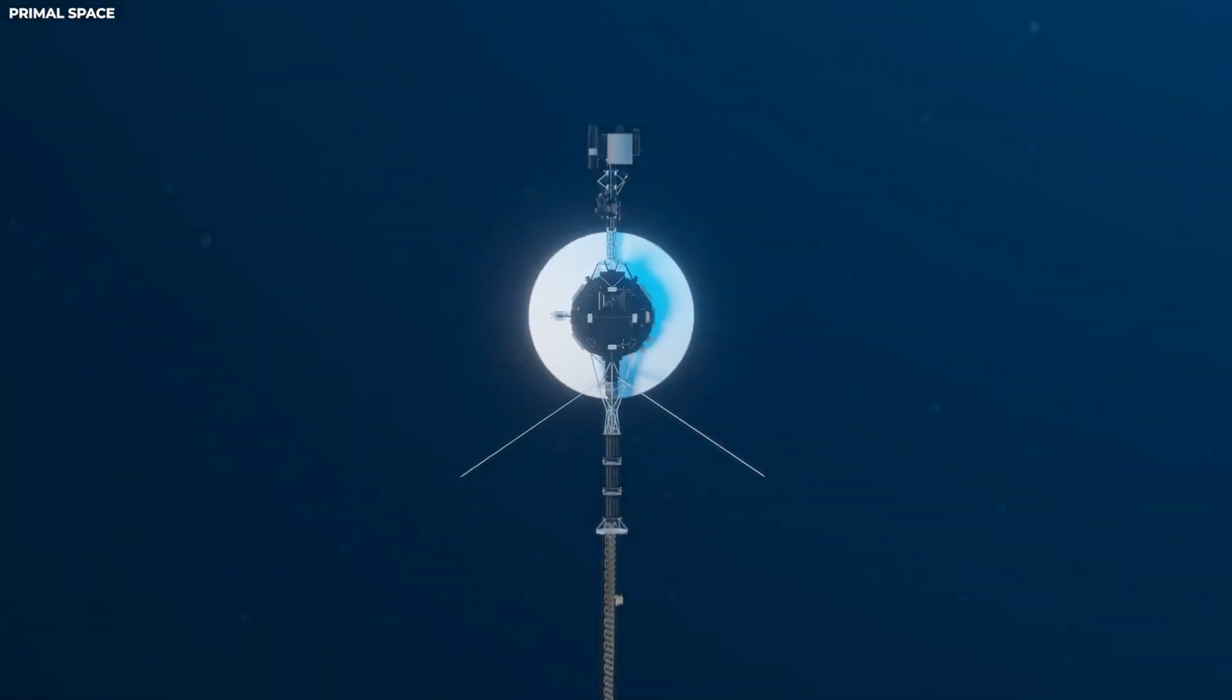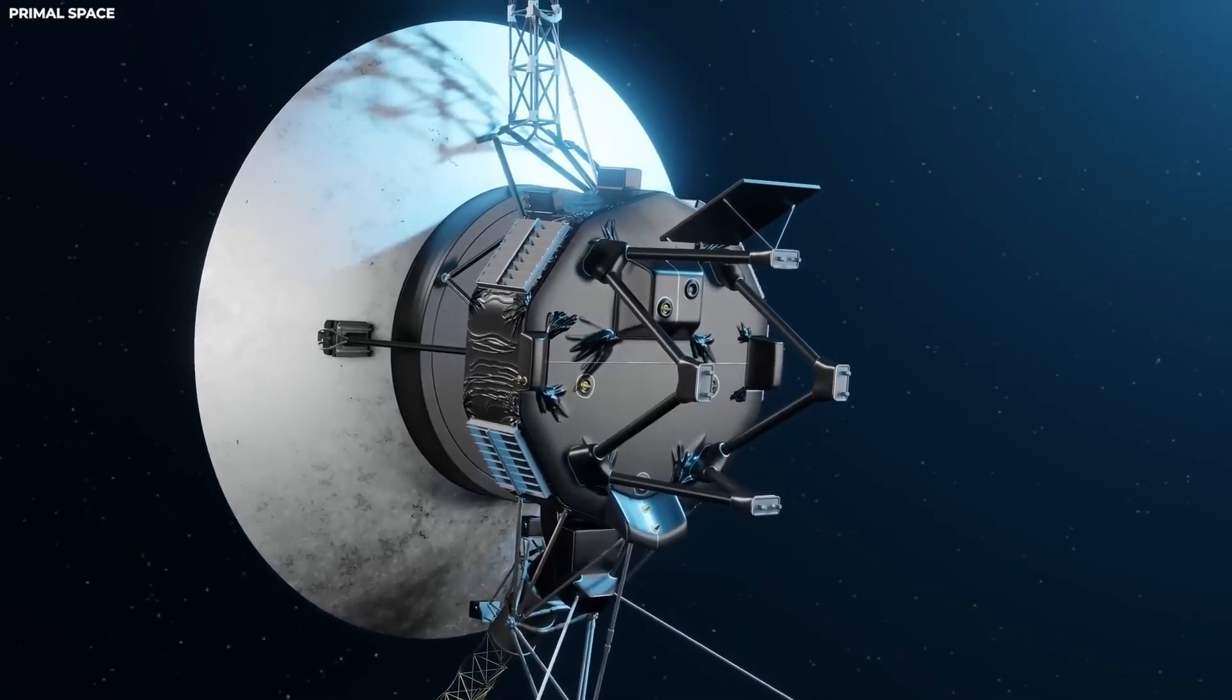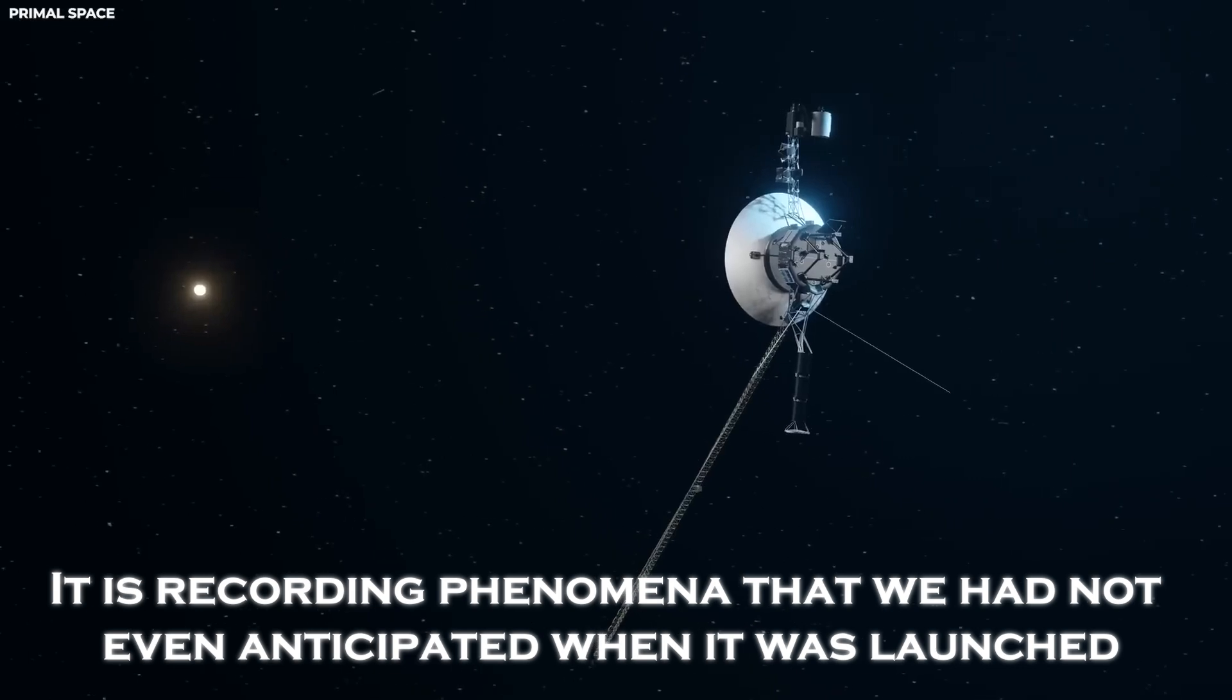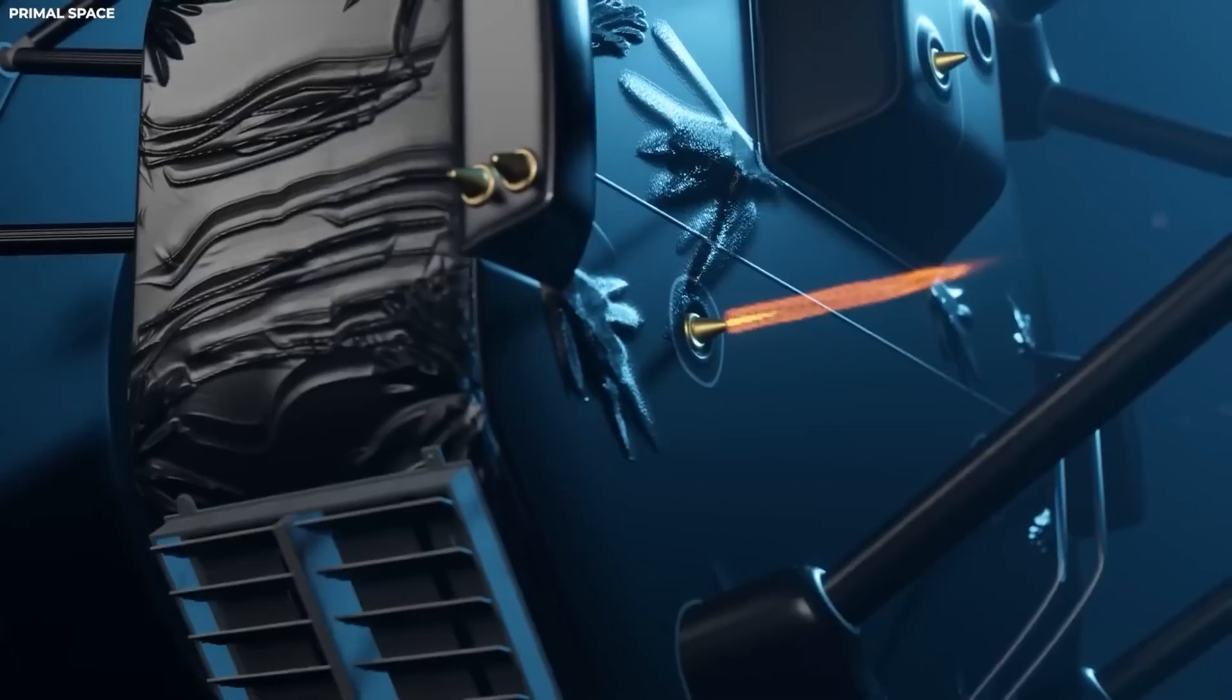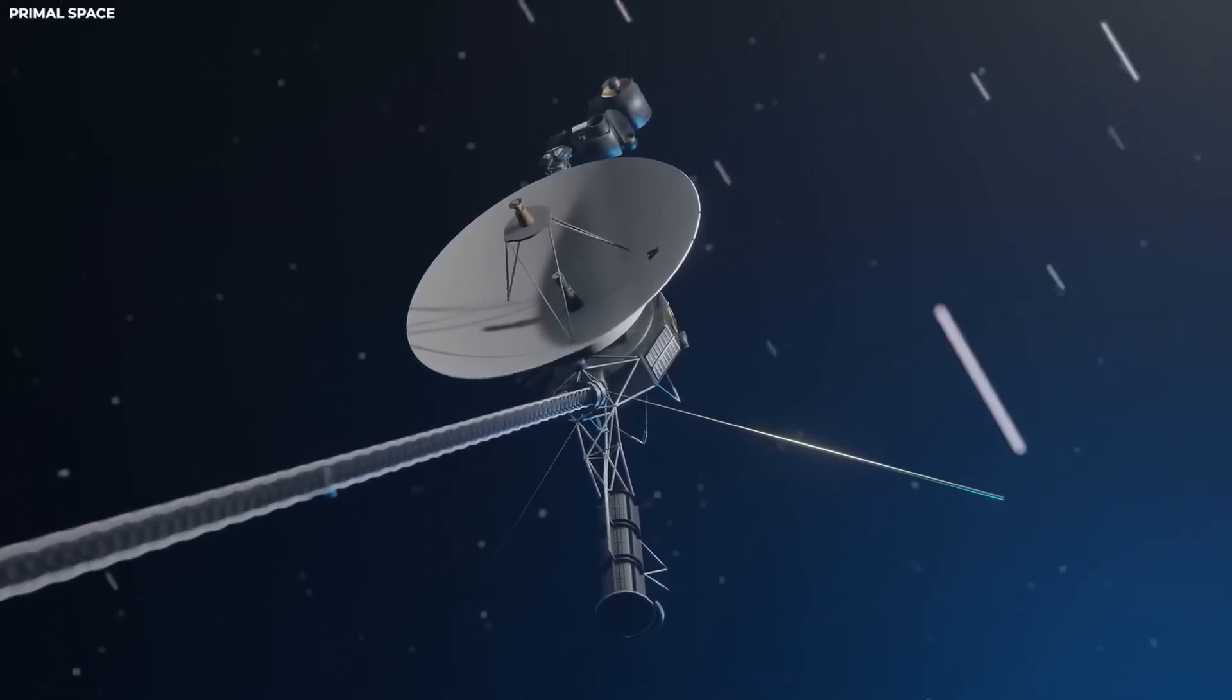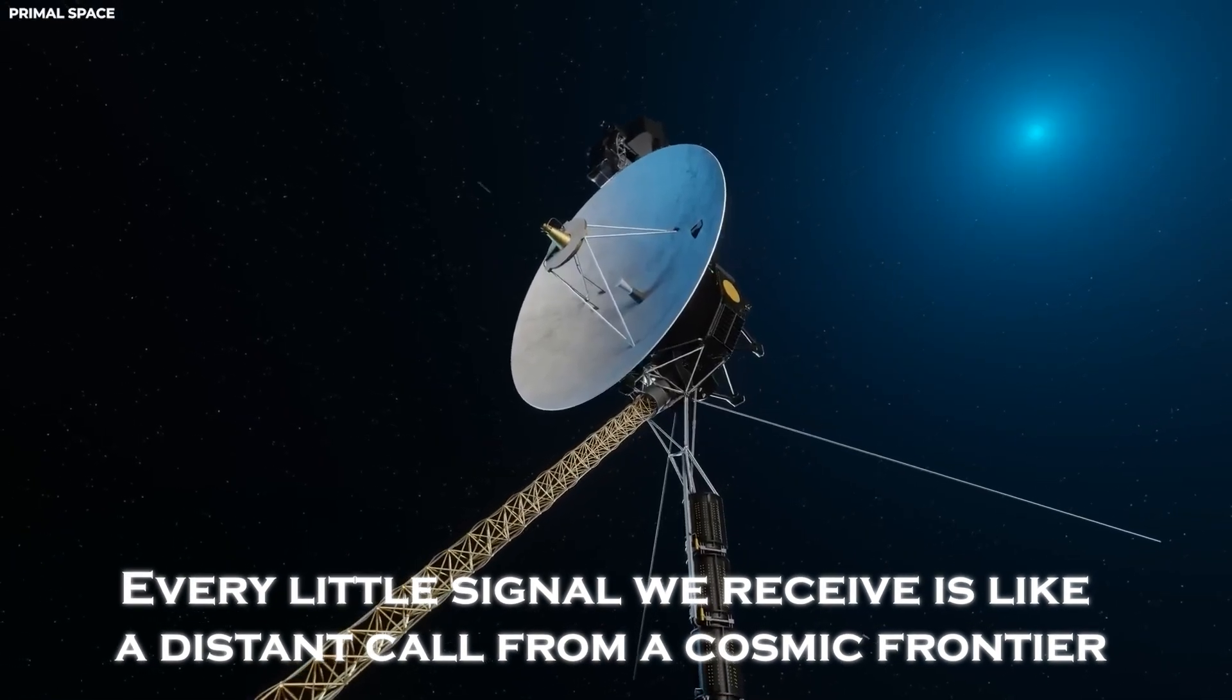Voyager 1's technology is antiquated compared to what we have today, but it remains our best tool at the frontier of the solar system. It is recording phenomena that we had not even anticipated when it first launched, and it remains our only witness in that remote region. Despite being more than 23 billion kilometers away from us, Voyager 1 continues to send back priceless data. Every little signal we receive is like a distant call from a cosmic frontier.